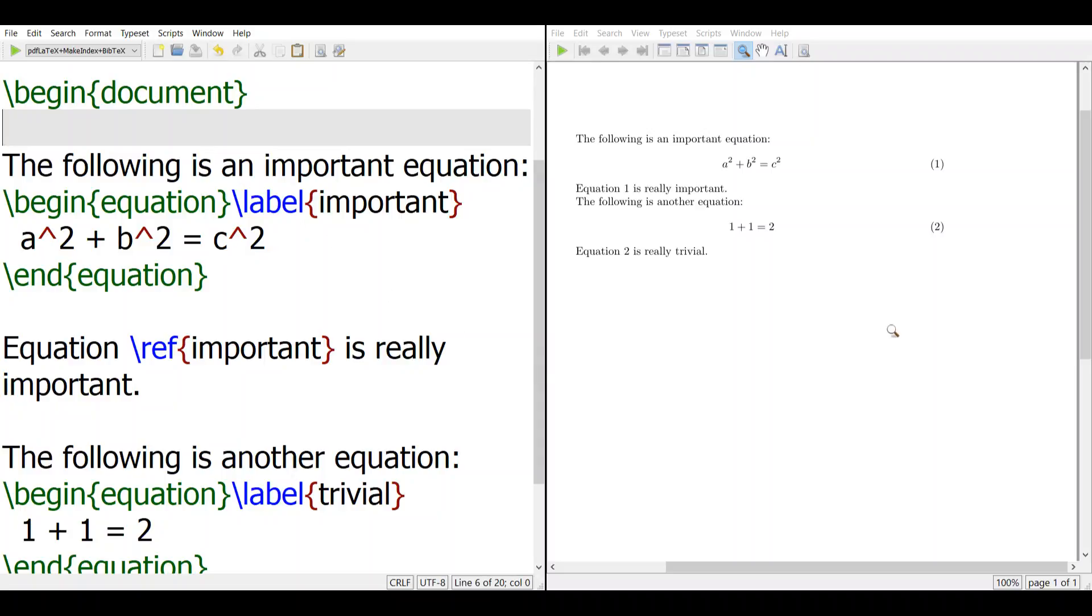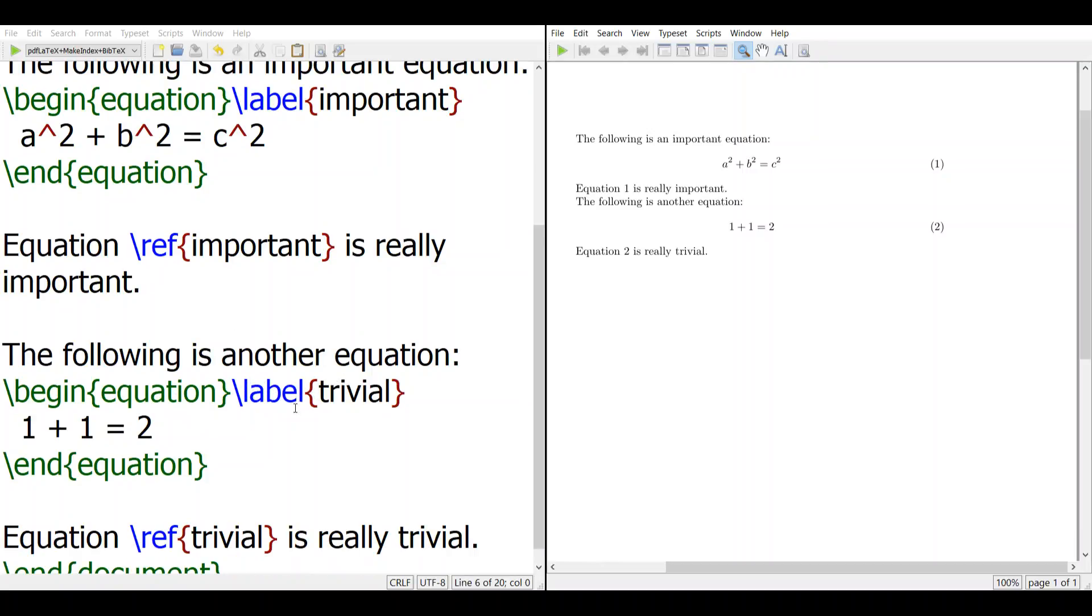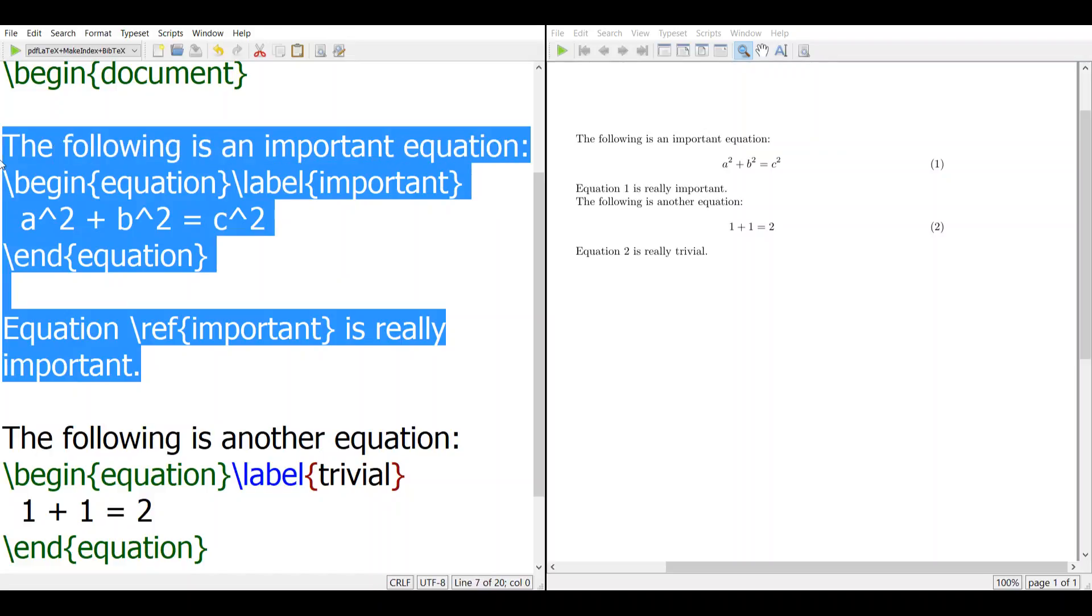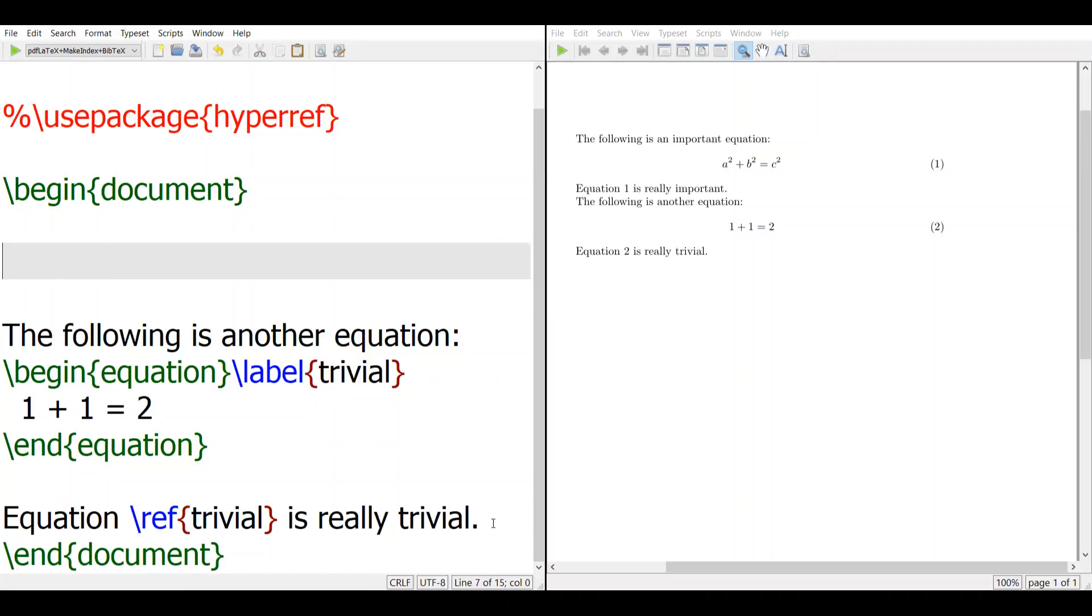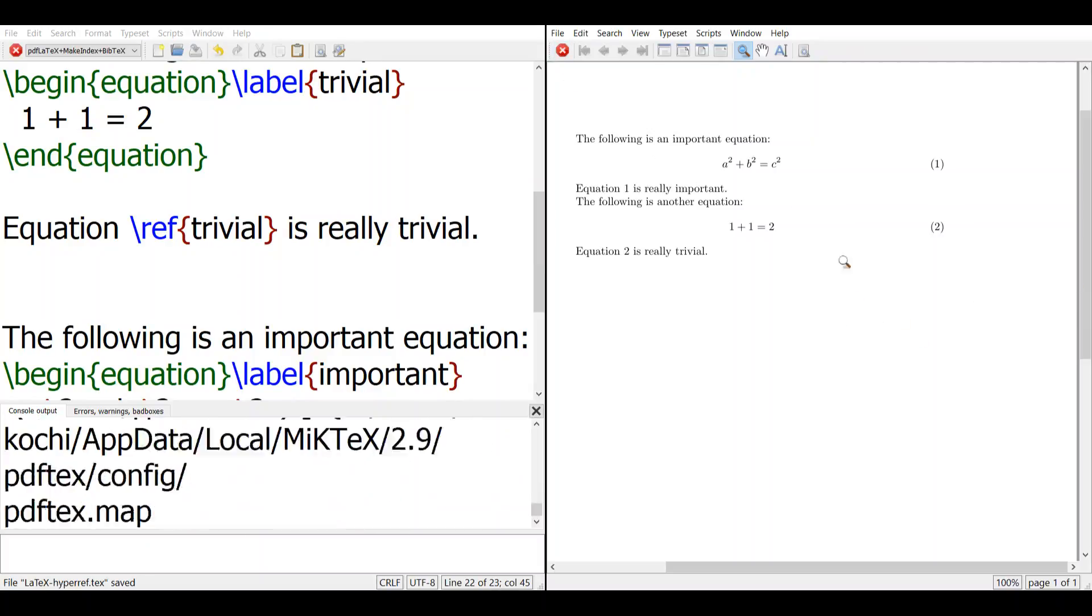So here we have first equation and we have equation reference important, and another equation, we have other equation trivial. So here if we have this order is 1 and 2, if we just move this downward, the good thing is the number changes accordingly.